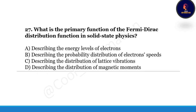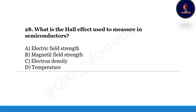Next question: what is the primary function of the Fermi-Dirac distribution function in solid-state physics — describing the energy levels of electrons, describing the probability distribution of electron speeds, or the distribution of magnetic moments? Correct option is A, describing the energy levels of electrons. Next question: what is the Hall effect used to measure in semiconductors — electric field strength, magnetic field strength, electron density, or temperature? Correct option is C, electron density.